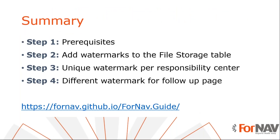Let's recap what we just did. The first thing we did is add the watermark to the file storage table in Business Central. After that, we added the file storage table to the records property of our reports and used JavaScript to select the watermark we want to use. You can use any type of data link you want — one usage would be to use a different watermark for certain dimensions. If you want to know more about using JavaScript in your Fornav reports, please check out our new guide on that topic.